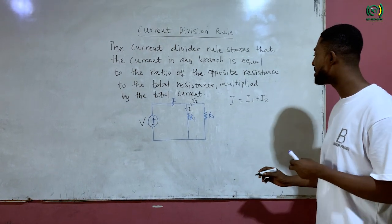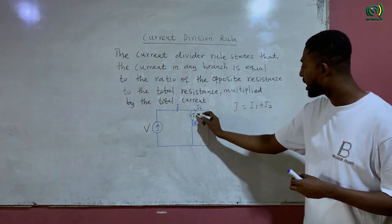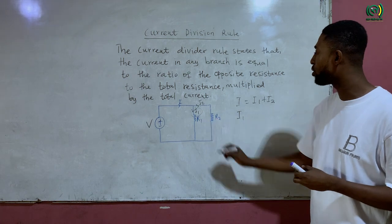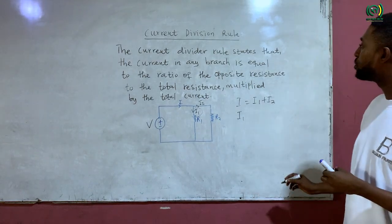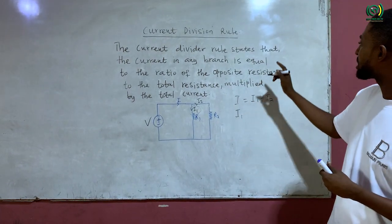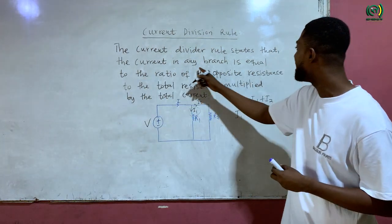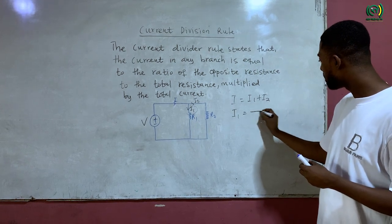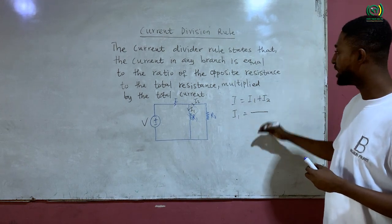Now using current division rule, for you to calculate the current I1 which is flowing through resistor R1, the rule states that the current in any branch is equal to the ratio. So whenever we talk of ratio, you should have a numerator and a denominator.